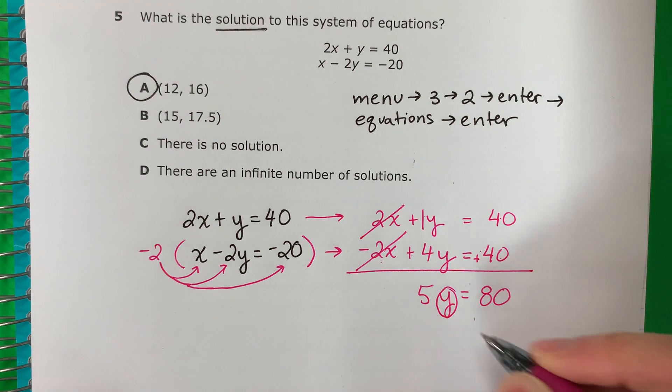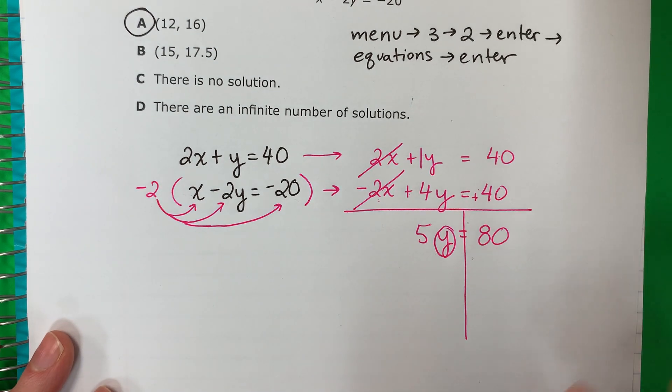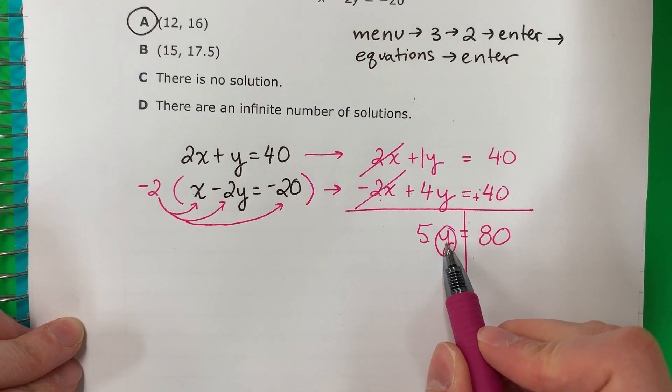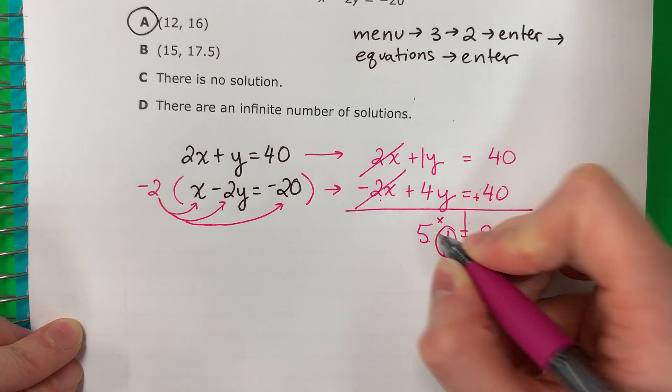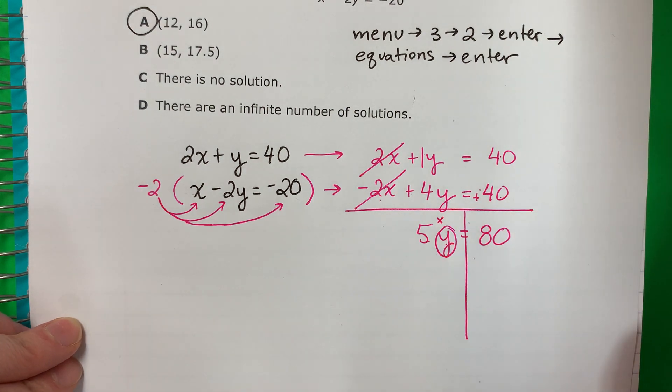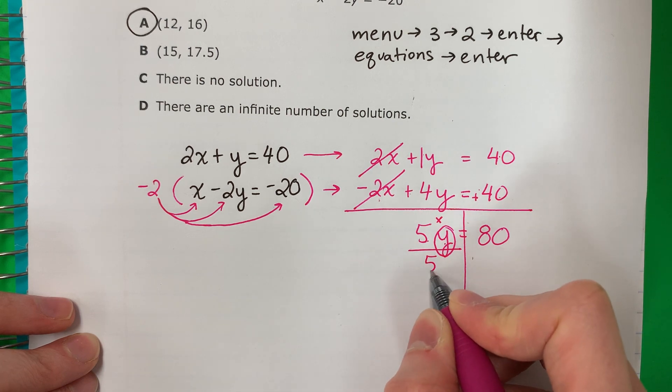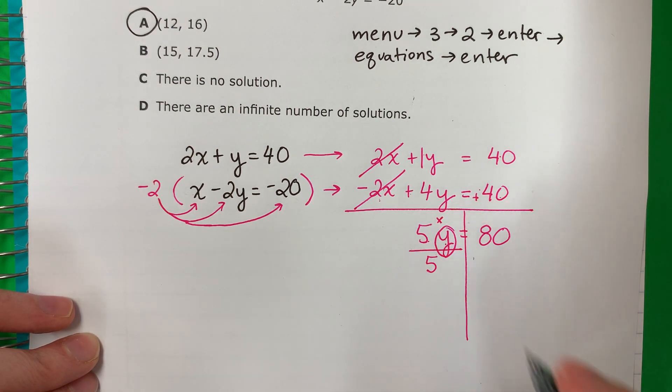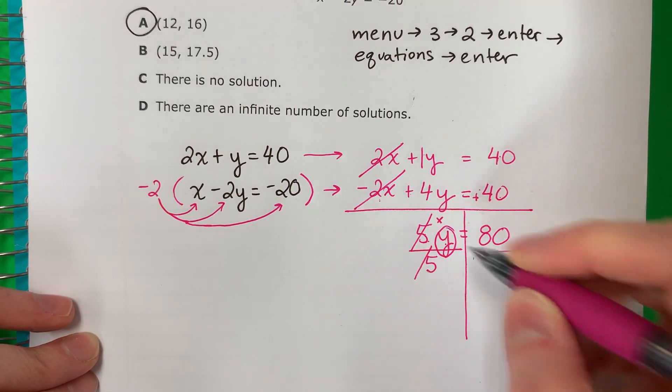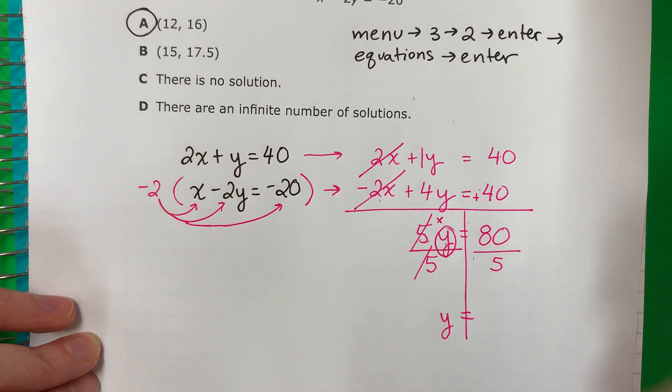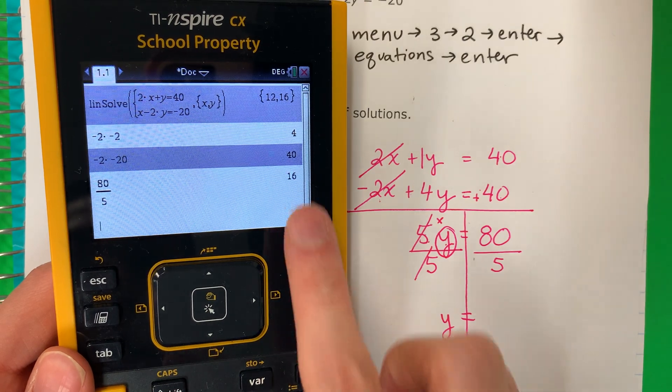Now, I want the y alone. Quiero la y sola. But the y is not alone. La y no está sola. I have a 5. Tengo 5. This is 5y, 5y. So, if there's no sign in the middle, it's multiply. Si no hay señal en el medio, es multiplicación. The opposite of multiply is divide. El opuesto de multiplicación es división. So, divided by the number with y. El número que está con y. 5. Copy. Divided by 5. 5 divided by 5 cancels. It's 1. Y equals 80 divided by 5. 16.